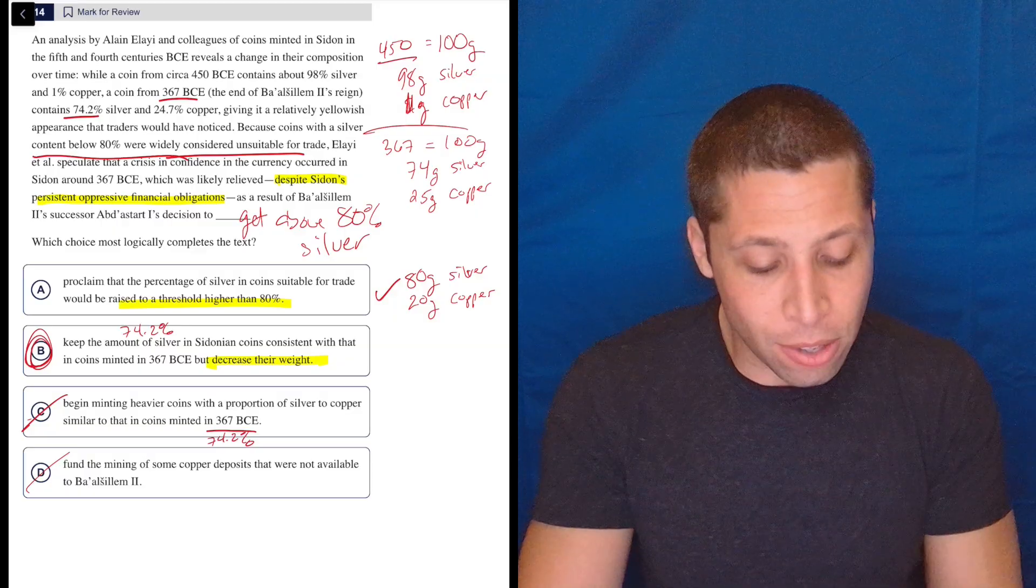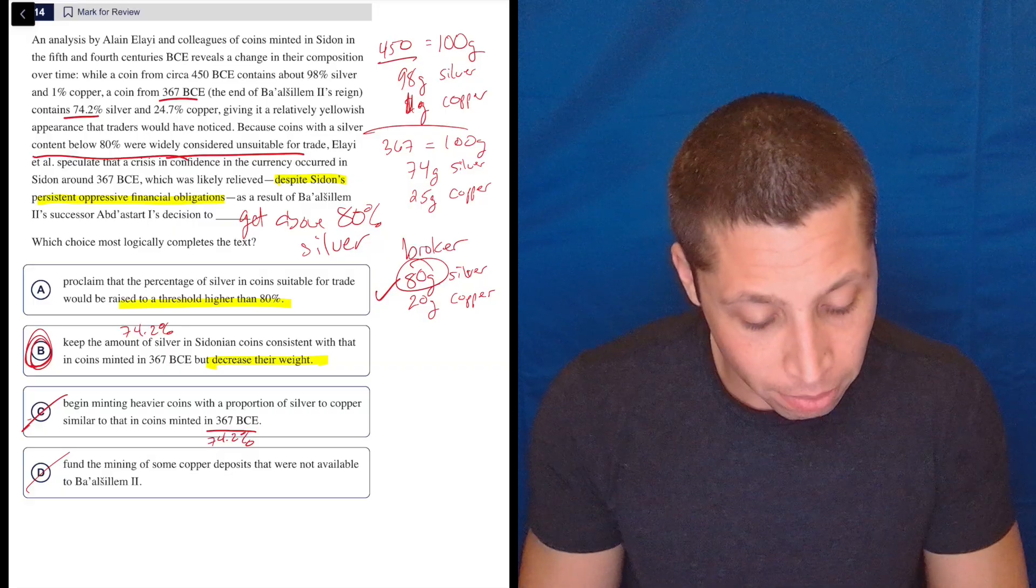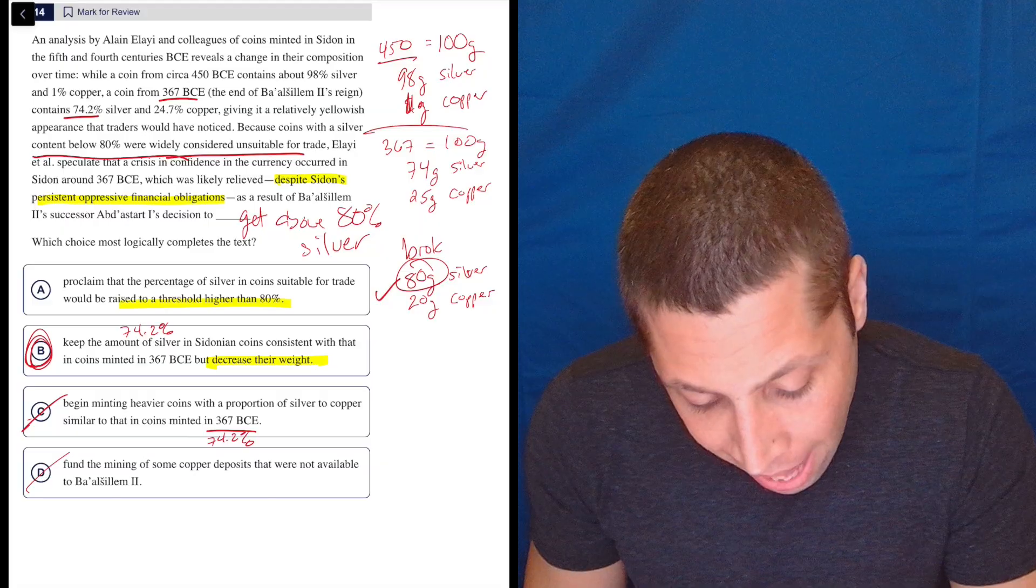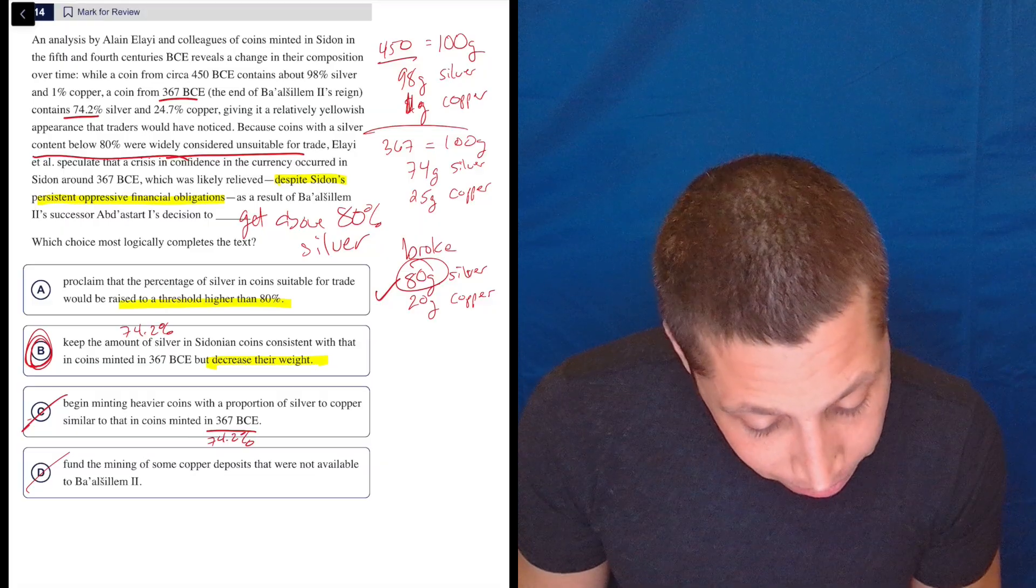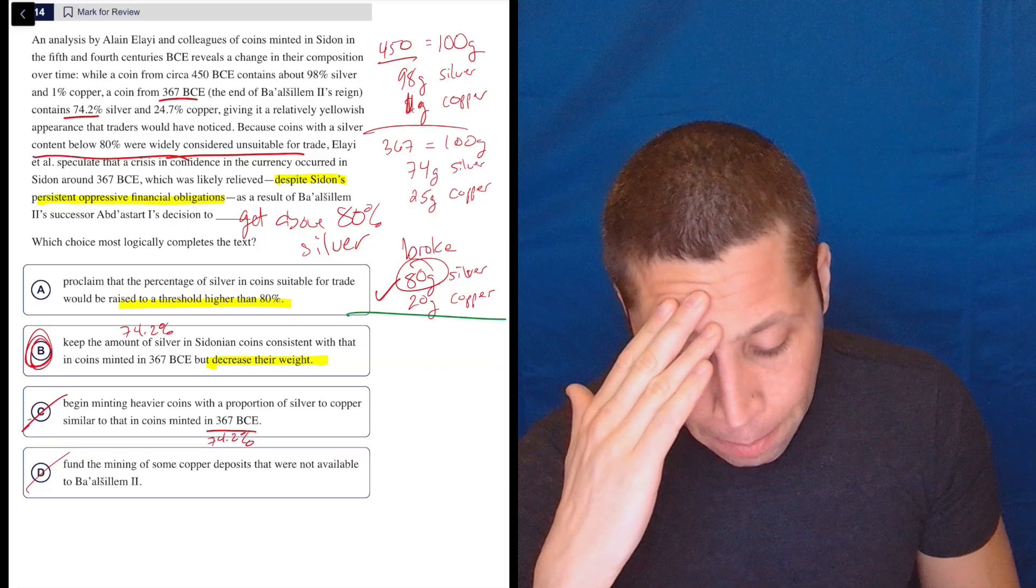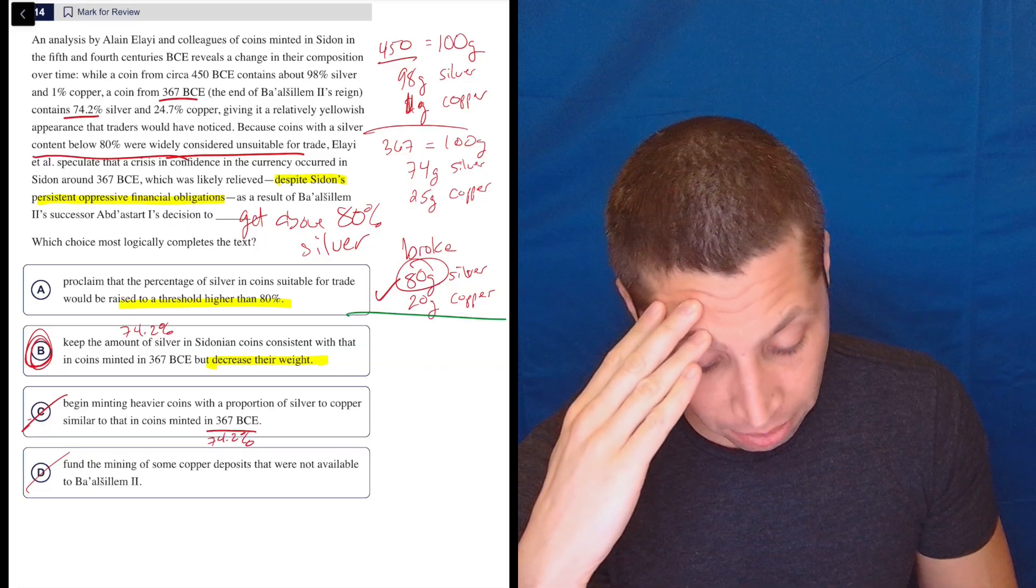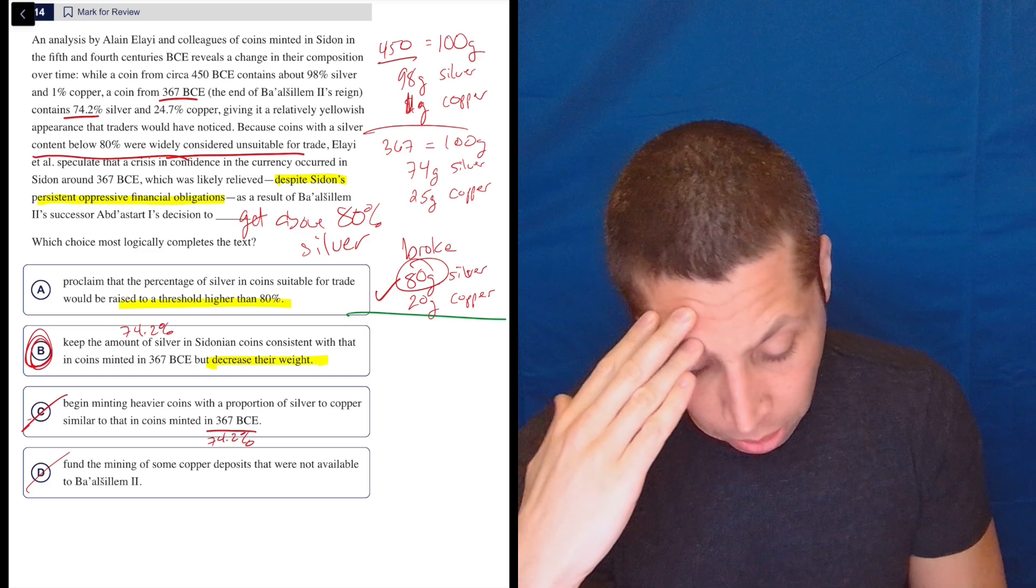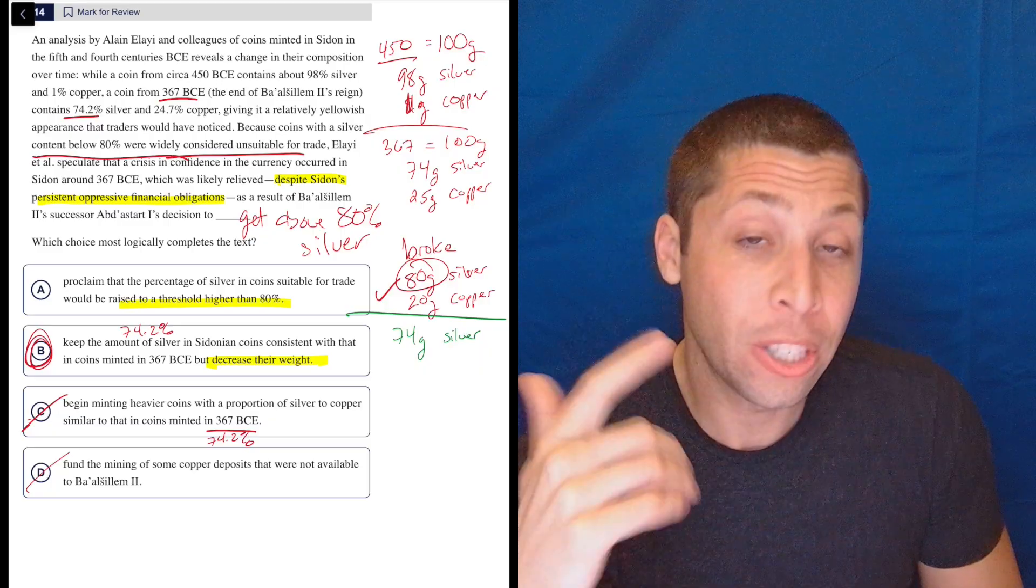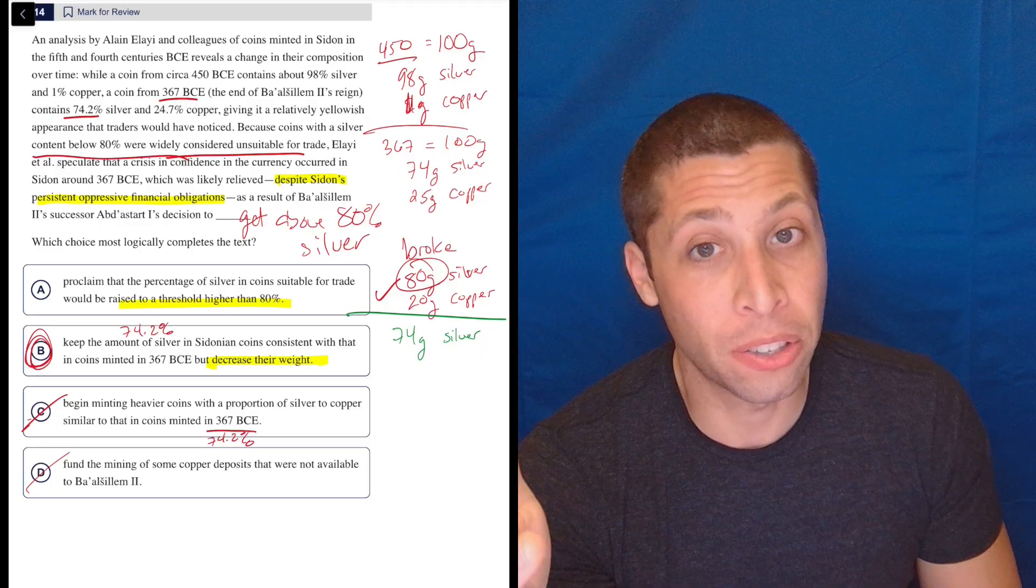That's why we're back down to 74 in the first place is we have to cheat because we have no money. So we're pretending that it's a legit coin when it's not. So that's the problem right here. They're broke. They don't have the ability to do that. I don't know why we're broke. So that's the problem with A. Now, if we go to B, let's kind of split this. Keep the amount of silver in Sidonian coins consistent with that in coins minted in 367 BCE. So meaning we're going to still have 74 grams of silver, but if we decrease their weight but we have the same amount of silver, that must mean we're decreasing the amount of copper.